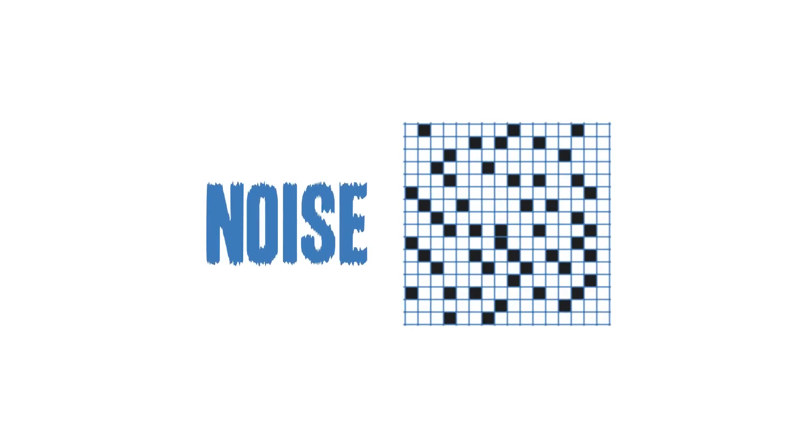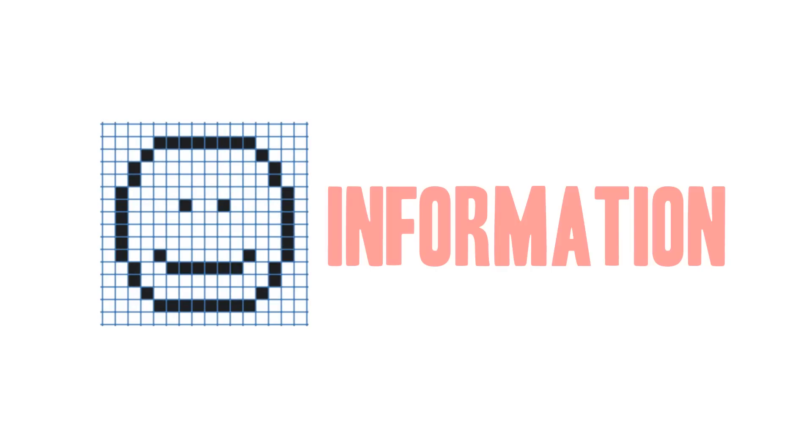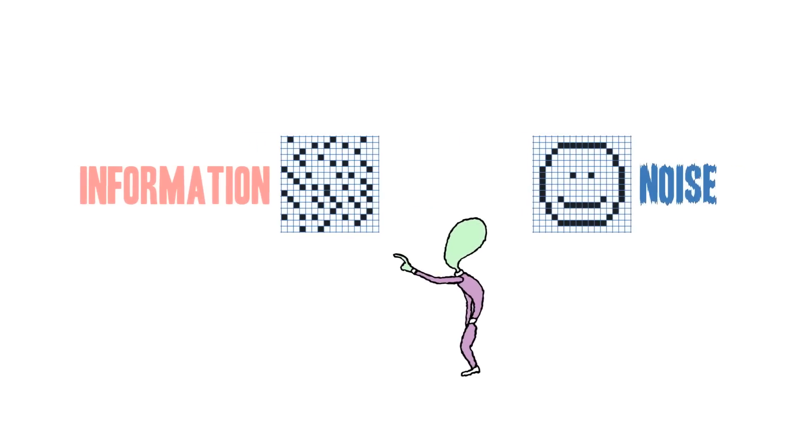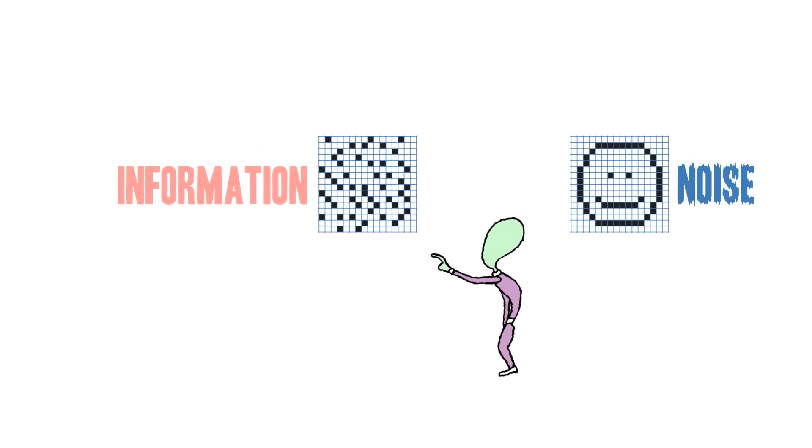Like, look at these two boxes. Both have the same number of black squares, but this one is just noise, while this one contains information. But wouldn't aliens say the same thing? If information is real, it should exist no matter who's looking, right?